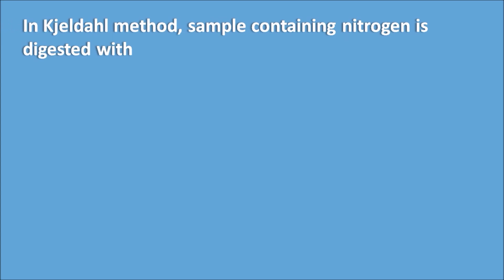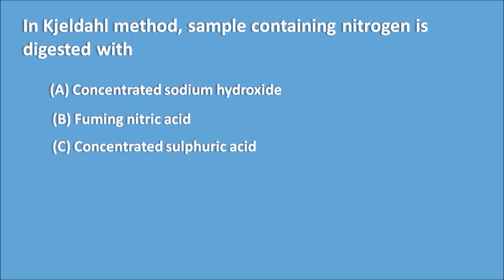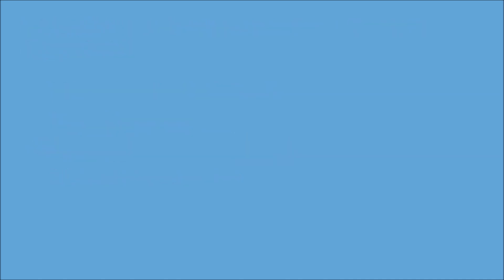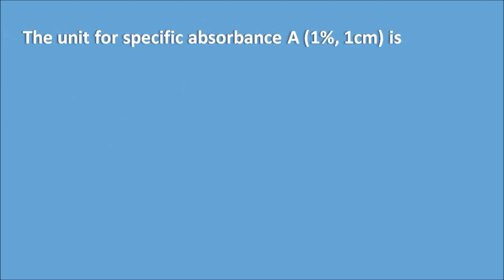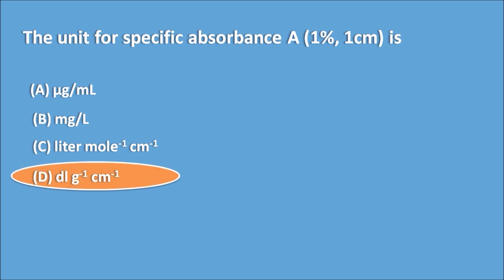In the Kjeldahl method, a sample containing nitrogen is digested with: (a) Concentrated sodium hydroxide, (b) Fuming nitric acid, (c) Concentrated sulfuric acid, (d) Strong ammonia solution. Answer: Concentrated sulfuric acid. The unit of specific absorbance A(1%, 1cm) is: (a) microgram/mL, (b) mg/L, (c) L·mol⁻¹·cm⁻¹, (d) dL·g⁻¹·cm⁻¹. Answer: dL·g⁻¹·cm⁻¹.